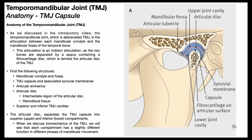Looking at the mandibular fossa, the anterior ridge that protrudes downward is called the articular tubercle, also called the articular eminence. Within the TMJ capsule, the purple structure is the articular disc. It divides the joint cavity — shown in dark blue — into an upper and lower half: the superior joint cavity above and the inferior joint cavity below. In the middle of the disc is the intermediate region, and attaching posteriorly to the synovial membrane is the retrodiscal tissue of the articular disc.